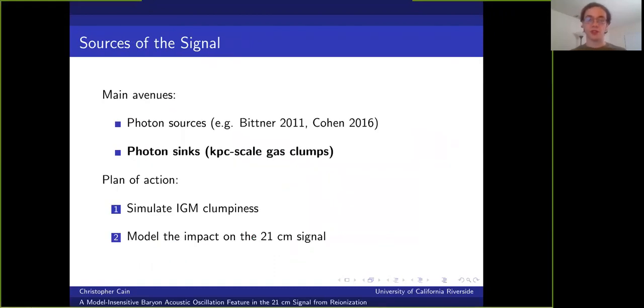Broadly speaking, during reionization, there are two main avenues through which the BAO features can enter the 21 centimeter signal. One is through the stream velocity's effect on the sources of ionizing photons that drive reionization and shape the distribution of neutral hydrogen. Now the BAO feature from sources has been studied before in the literature. I've included a couple references here. Although large uncertainties remain because the properties of the ionizing sources are not well constrained.